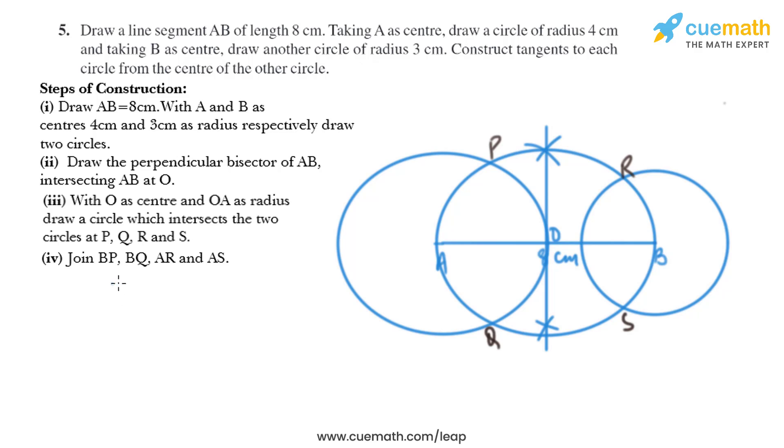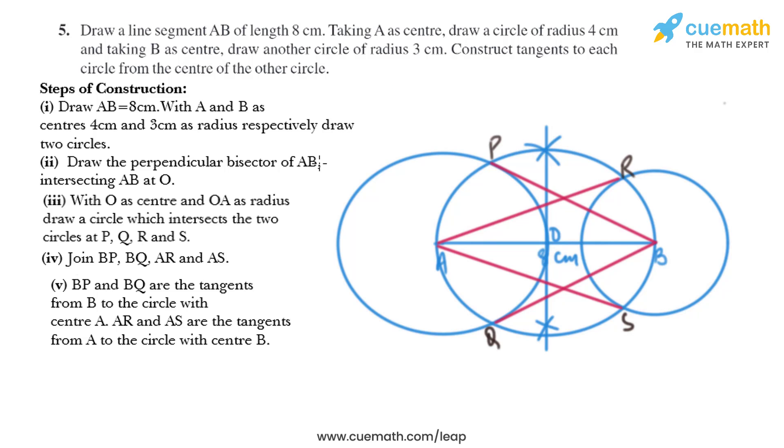Now in the next step we need to join BP, BQ, AR and AS. So we'll draw lines like this to join these points. So we have got BP and BQ are the tangents from B to the circle with center A, and AR and AS are the tangents from A to the circle with center B.